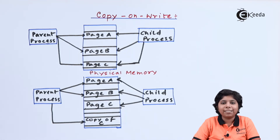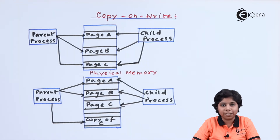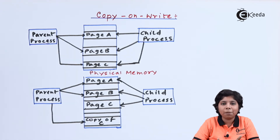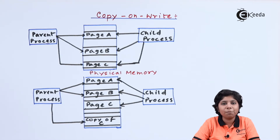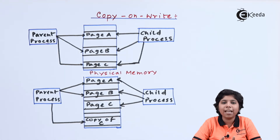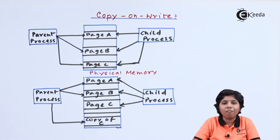For example, suppose the child process wants to modify a page within the process that contains the stack. The operating system will first identify the process and check whether the page is in memory or not. If it is in memory, it will map it to the child process's address space. The child process will then modify the content within its own address space, not in the parent's copy of that stack page.